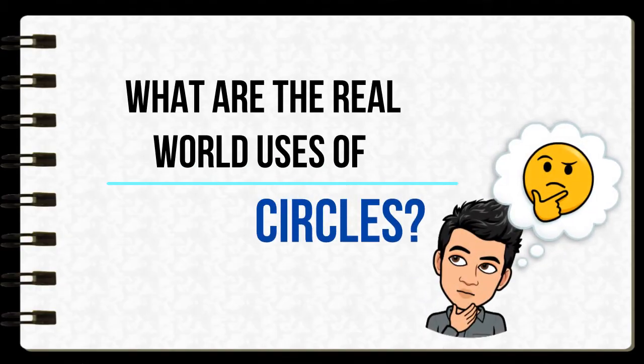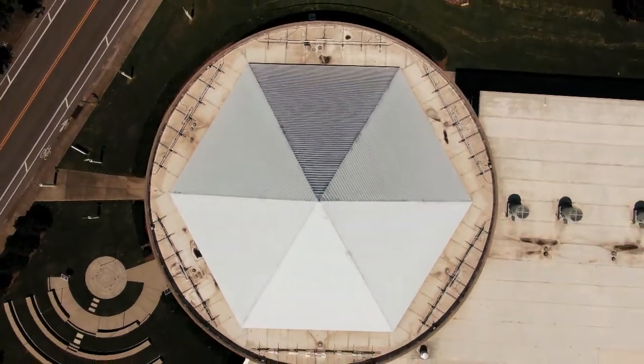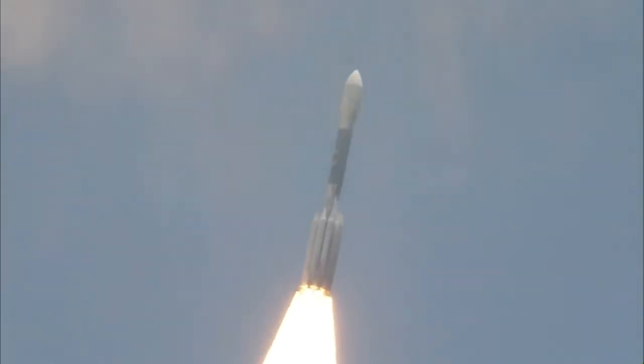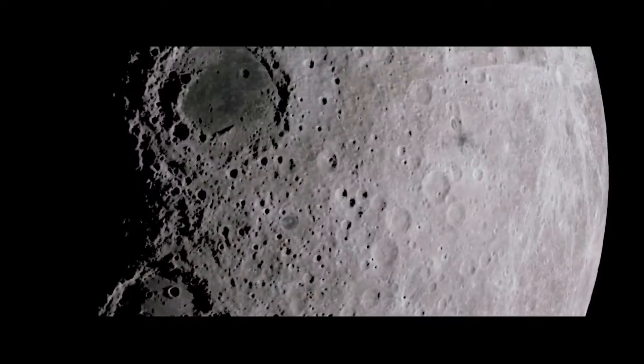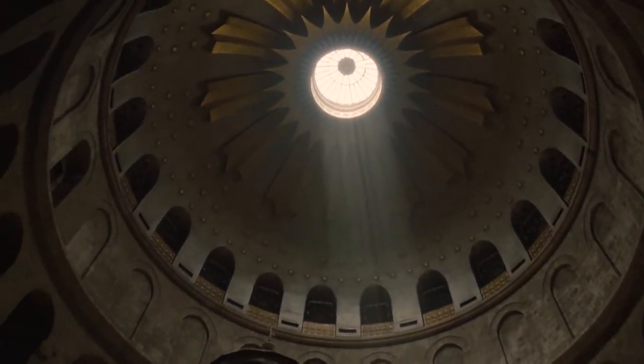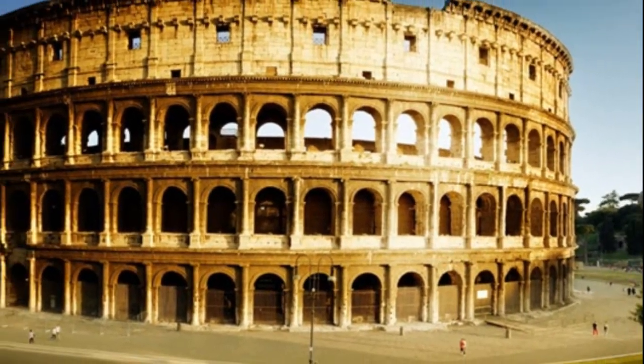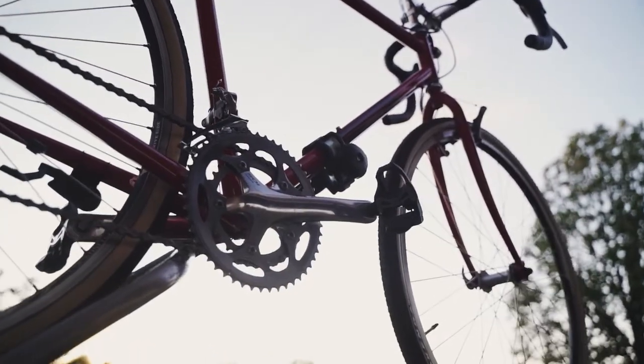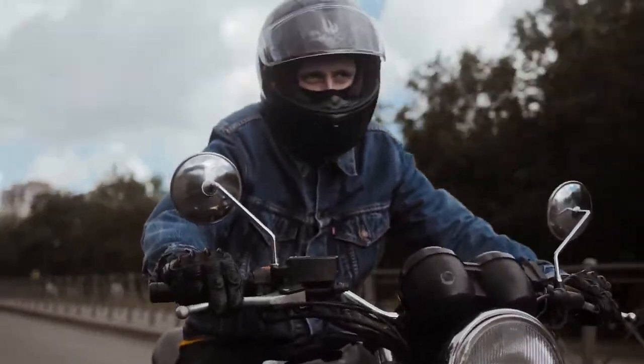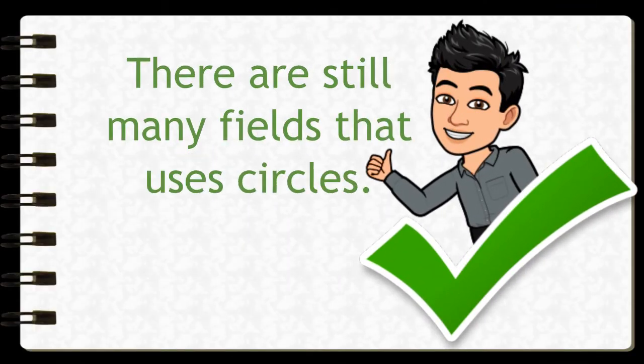Now let's know the real world uses of circles. Architectural designs, science uses it to compute trajectories and planetary craters, construction also uses circles. Wheels are developed for transportation - bicycles, motorcycles, and other vehicles use wheels, and a lot more.